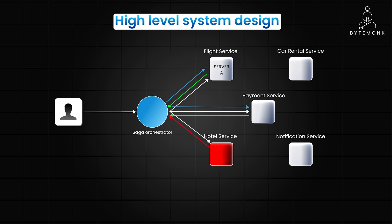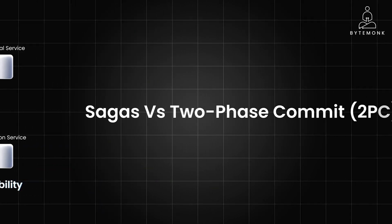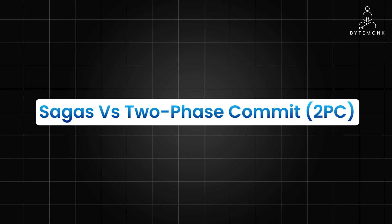Sagas are much more flexible than traditional distributed transactions like two-phase commit. If a step fails, you can trigger compensating transactions to undo the previous actions. For instance, if the payment fails, you can cancel the flight reservation and release the hotel room. Sagas are ideal when you want your services to be independent and not tightly coupled to a central coordinator, when you need to handle complex workflows and recover from failures gracefully, and when you want your systems to be able to scale horizontally as workload increases.